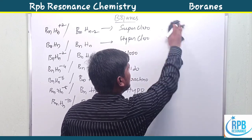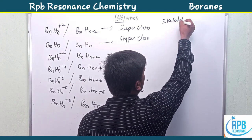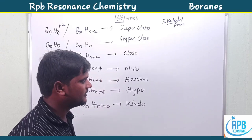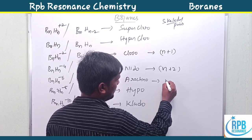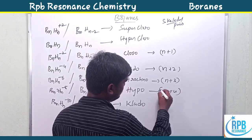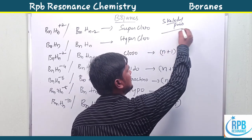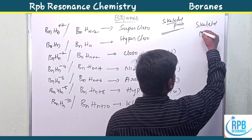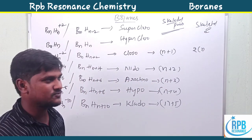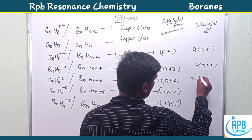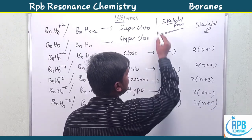Now let us discuss skeletal electron pairs (SEP). For closo, there are n+1 skeletal pairs. For nido, n+2 pairs. For arachno, n+3. For hypo, n+4. For clado, n+5. The number of skeletal electrons is simply twice the number of pairs: 2(n+1), 2(n+2), 2(n+3), 2(n+4), and 2(n+5) respectively.